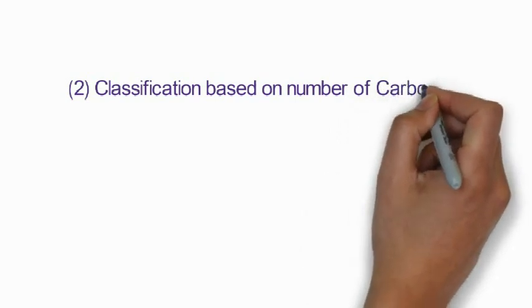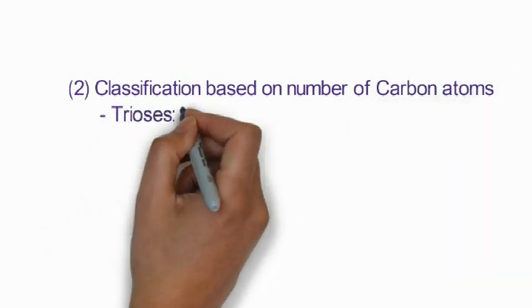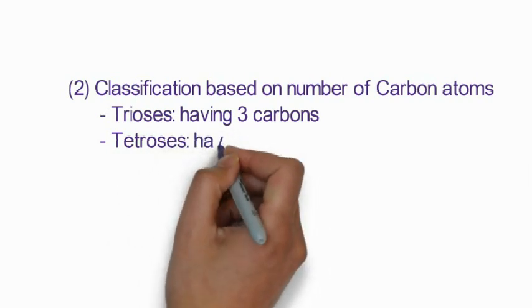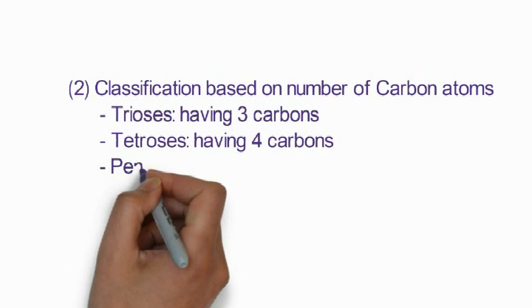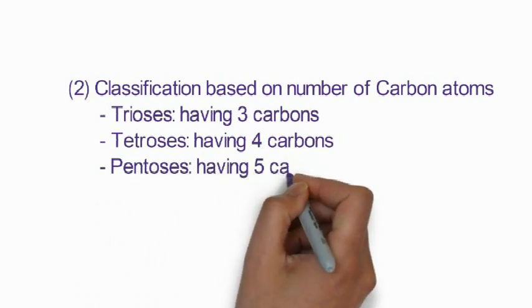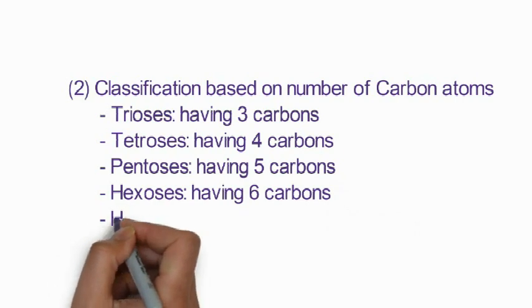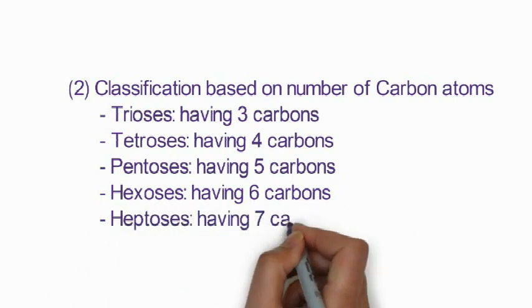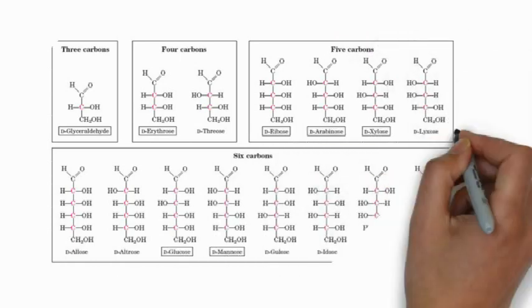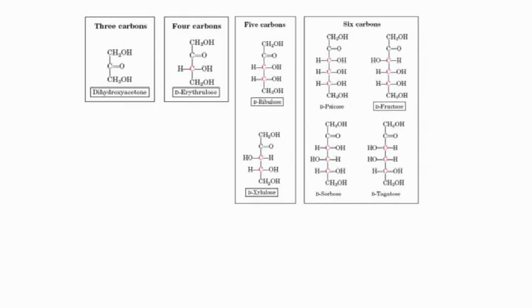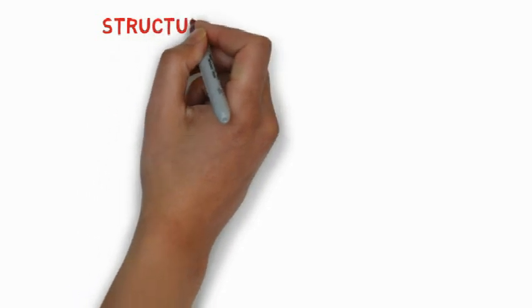The second classification of monosaccharides is based on the number of carbon atoms. The first class is trioses, which have three carbon atoms. The second class is tetroses, with four carbon atoms. The third class is pentoses, having five carbon atoms. Hexoses have six carbon atoms. Heptoses, which are quite rare, have seven carbon atoms. You can see examples for three-, four-, five-, and six-carbon aldoses and ketoses.